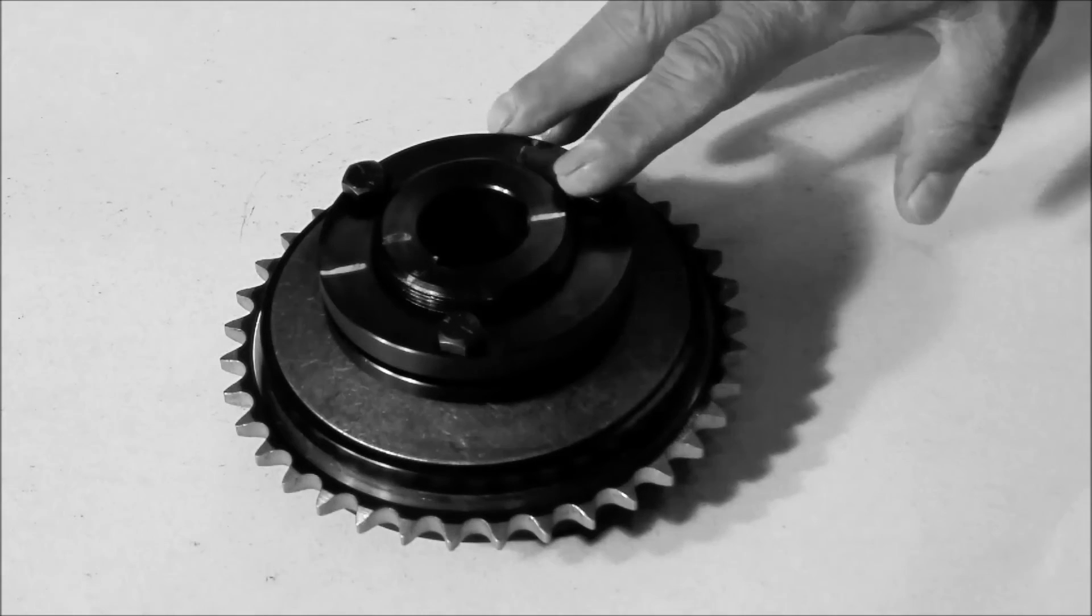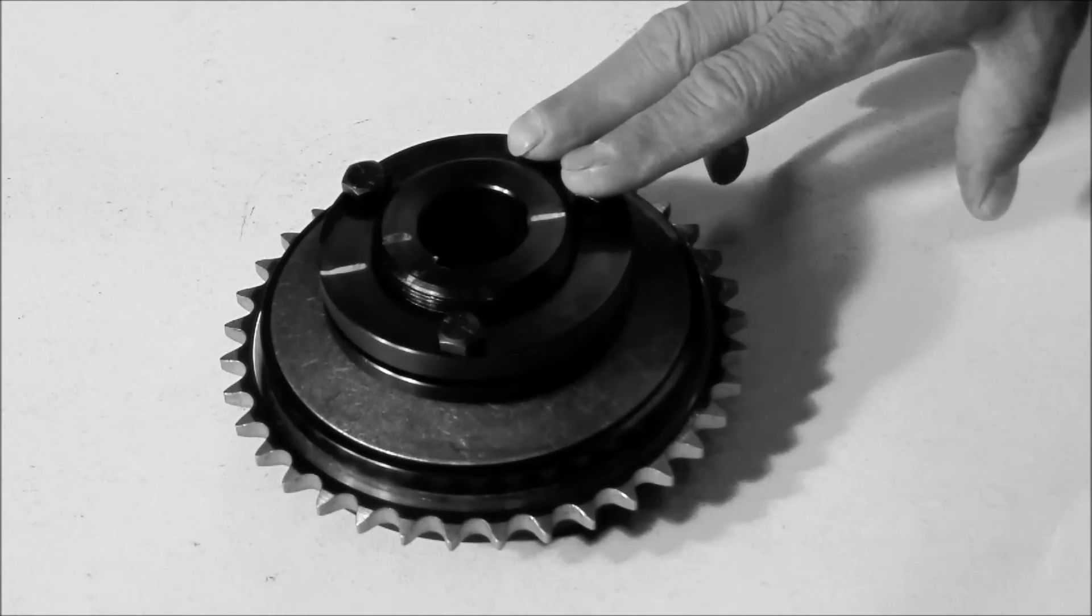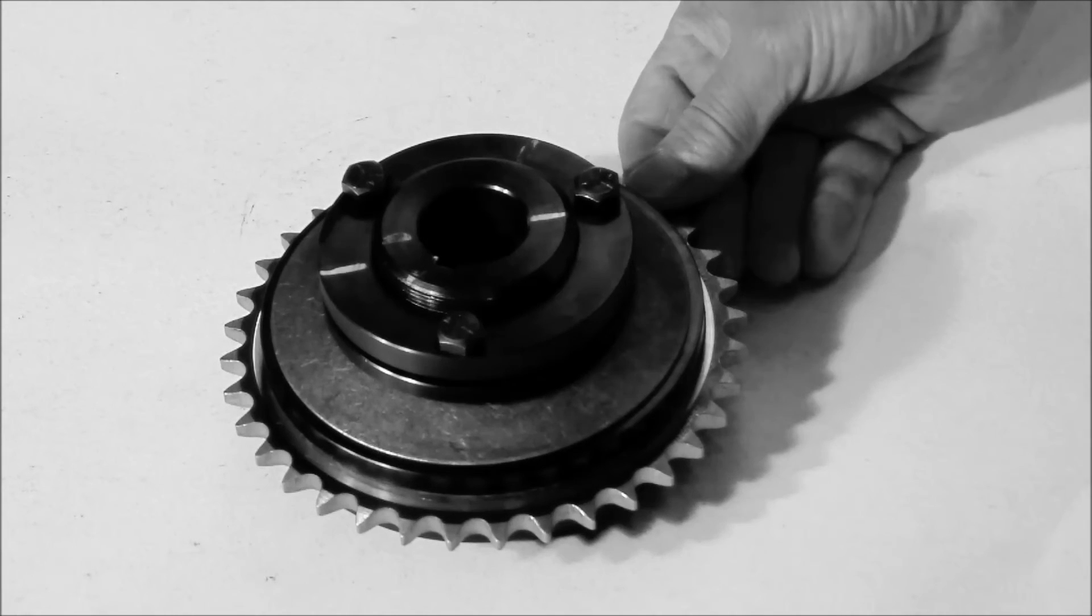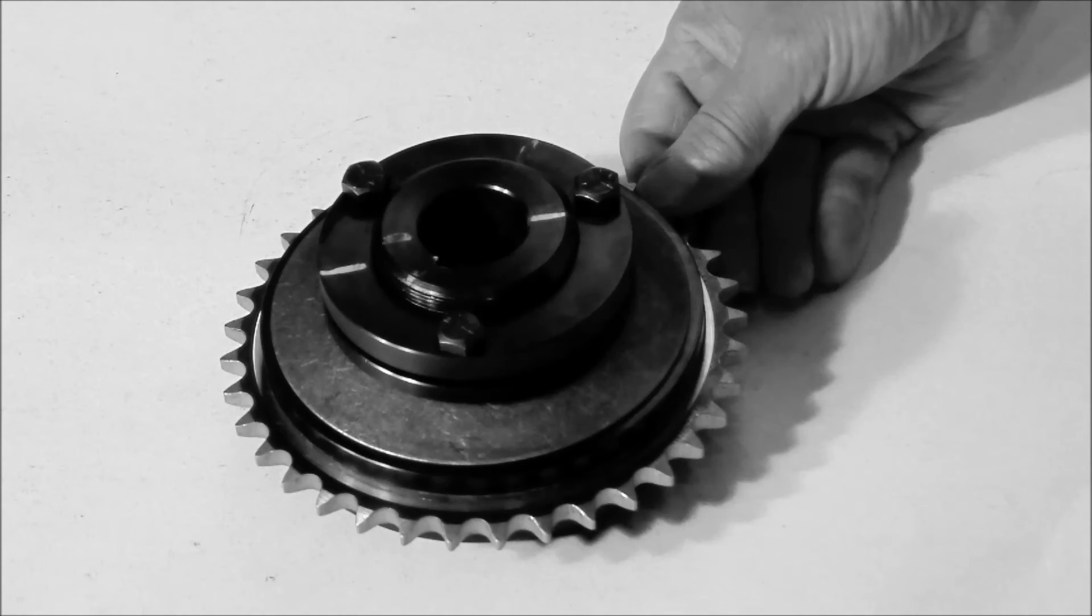So the TL-500 and TL-700 torque limiters are built exactly the same. The only difference is the 500 is the lighter duty and the 700 is the more heavy duty.